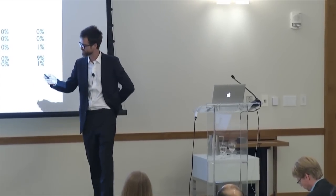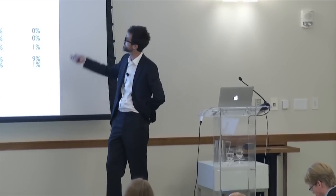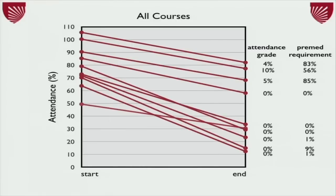So here's the same plot I showed before, but with those two variables. So this is the percentage of students' grades that was based upon their attendance. Attendance was measured via clickers. The top three have four, ten, and five percent. And they also, students report taking those courses to fulfill pre-med requirements.